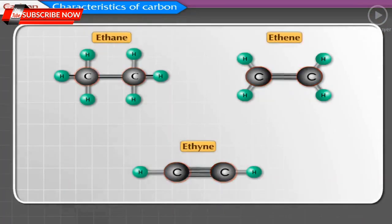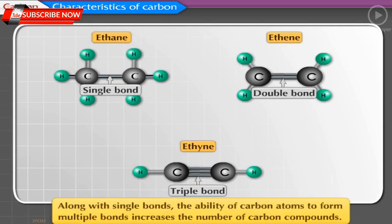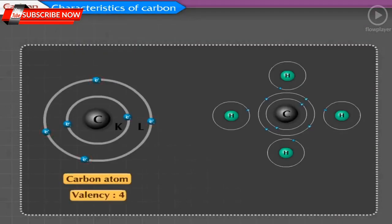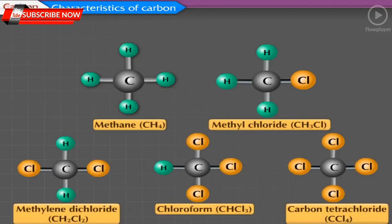Two carbon atoms can be bonded by one, two, or three covalent bonds — called single, double, and triple bonds. The ability of carbon to form multiple bonds increases the number of carbon compounds. For example, using two atoms of carbon, three compounds are formed: ethane (CH₃−CH₃), ethene (CH₂=CH₂), and ethyne (CH≡CH). As the valency of carbon is 4, one carbon atom can form bonds with four carbon or other atoms, resulting in the formation of many compounds.